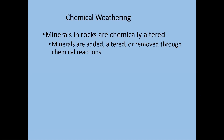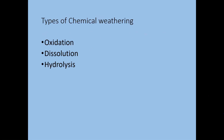In chemical weathering, the minerals in the rocks are chemically altered. With physical weathering, nothing changes chemically — the rock just gets smaller. But with chemical weathering, minerals are actually added, changed, or removed through chemical reactions. Some of the more common types are oxidation, dissolution, and hydrolysis.